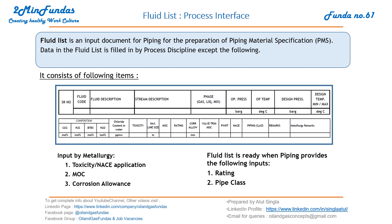Additional fields include toxicity, maximum line size, MOC (material of construction), rating, and frozen allowance. All these items are mentioned in the fluid list, making it the first input for PMS development.